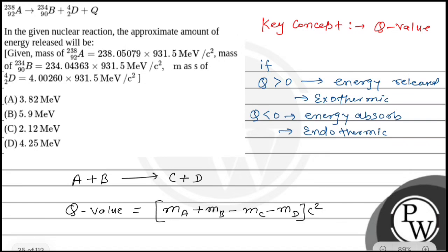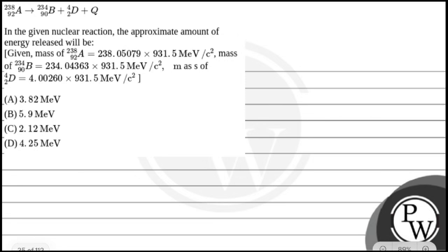So in this question, we have Q-value, that is Q equals the reactant mass, that is M_A minus the product, that is M_B minus M_D. This is the value of Q into C square. Now we put the mass of A, simply Q equals mass of A, 238.05079.